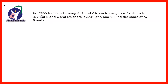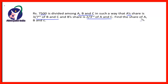Here is one more question of the same type: Rs.7,500 is divided among a, b and c in such a way that a's share is 3/7 of b and c, and b's share is 2/3 of a and c. Find the share of a, b and c.